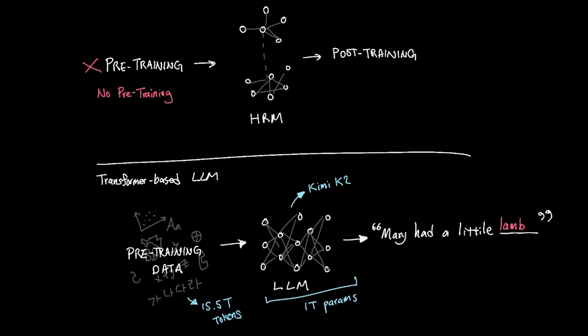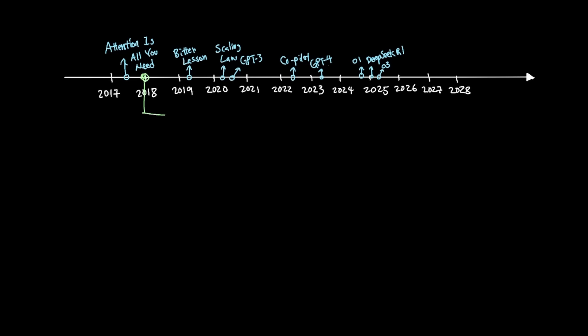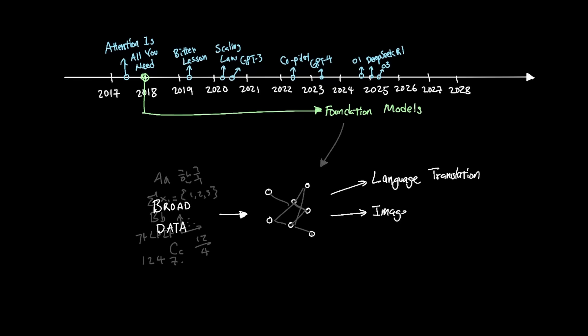So how is it even possible that HRM can perform so well without any pre-training? The LLMs that we use today are what's known as foundation models. Foundation model essentially means that it was pre-trained on broad data that can be adapted to a wide range of downstream tasks like language translation, image recognition, or code generation.